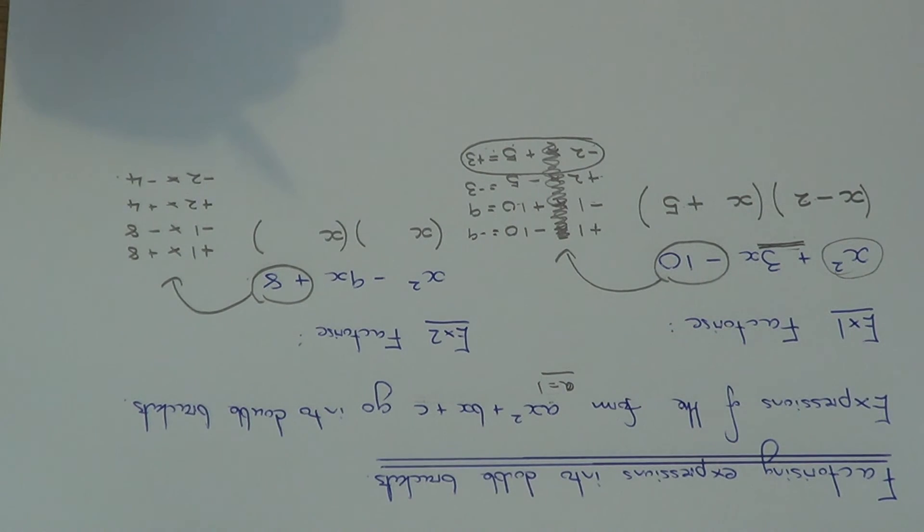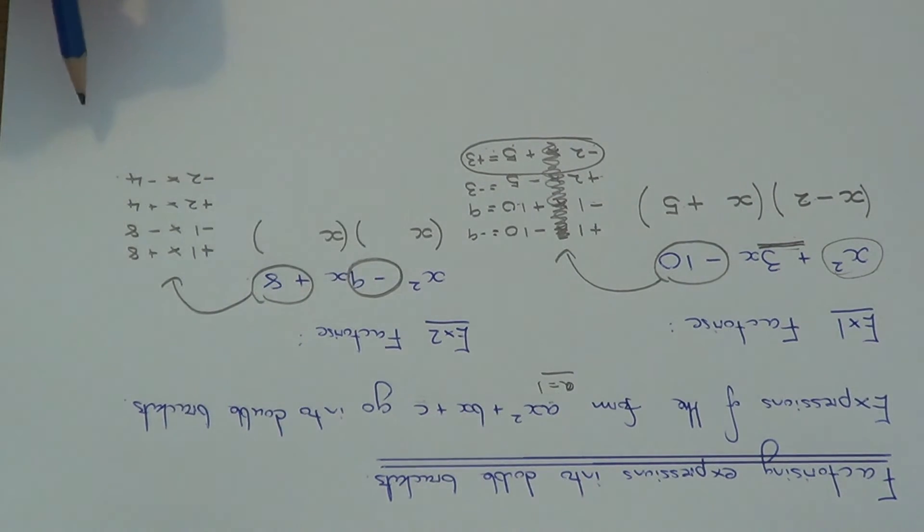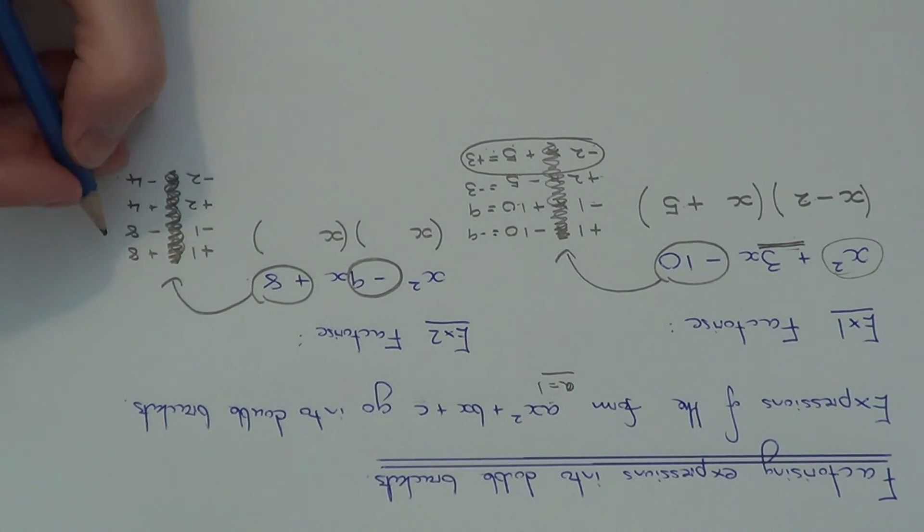So the next thing we need to do is decide which of these pairs will give us the middle number, which is minus 9. So that's the number before x. So if we ignore the multiplication signs, which one of these pairs of factors would give us minus 9 if we add or take them? So 1 and 8 is 9. Minus 1, take away 8, would be minus 9. So it's looking like this one here, so there's no need to work out the other two.